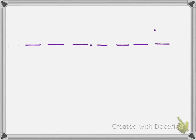We would call this the ones place, the tens place, the hundreds place, and that would keep going to the left. To the right of the decimal, this would be one tenth, one one-hundredth, one one-thousandth, and that would keep going in that direction.